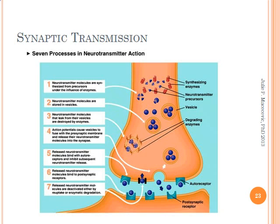This slide shows seven processes of neurotransmitter action. Number one: neurotransmitter molecules are synthesized from precursors under the influence of enzymes. Number two: neurotransmitter molecules are stored in vesicles. Number three: neurotransmitter molecules that leak from the vesicles are destroyed by enzymes. Number four: action potentials cause vesicles to fuse with the presynaptic membrane and release their neurotransmitter molecules into the synapse. Number five: released neurotransmitter molecules may bind with autoreceptors and inhibit subsequent neurotransmitter release. Number six: released neurotransmitter molecules bind to postsynaptic receptors. Number seven: released neurotransmitter molecules are deactivated either by reuptake or enzymatic degradation.